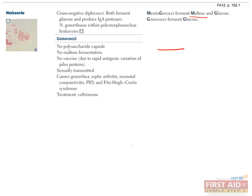Let's talk about Neisseria gonorrhoeae first. This organism is primarily responsible for the sexually transmitted disease gonorrhea. An important method for isolating Neisseria bacteria from clinical samples is to grow the specimen on Thayer-Martin medium. Thayer-Martin medium contains VPN agar, which consists of vancomycin, polymyxin, and nystatin. Vancomycin inhibits growth of gram-positive organisms, polymyxin inhibits other gram-negative organisms, and nystatin inhibits fungi, so that only Neisseria will be able to grow. Gonorrhea is transmitted via unprotected sexual intercourse.